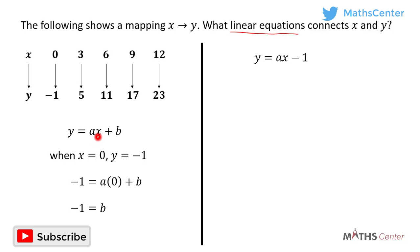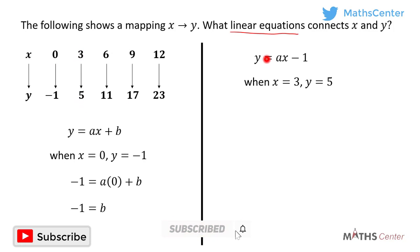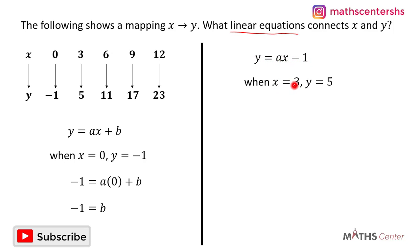We used the first point to get the value of b. Now let's pick the second one to get the value of a. For the second point, when x is equal to three, y is equal to five. Remember, you can pick any of the points. The rule is now y is equal to ax minus one, so we substitute x equals three and y equals five.